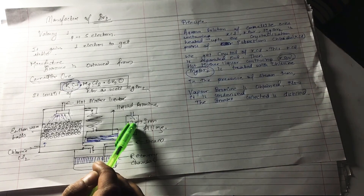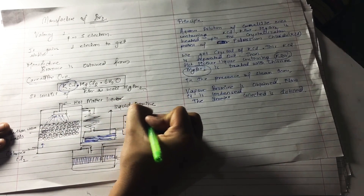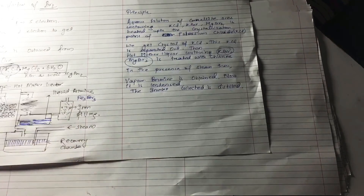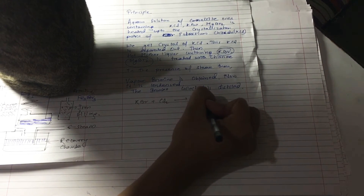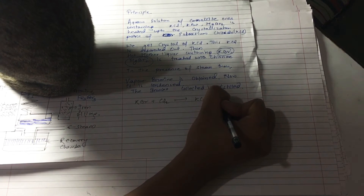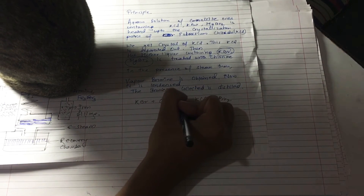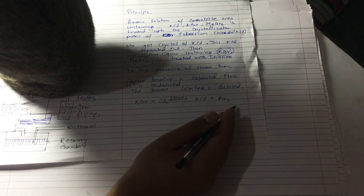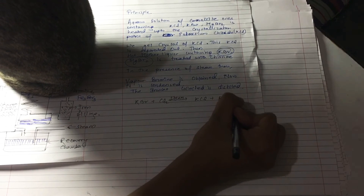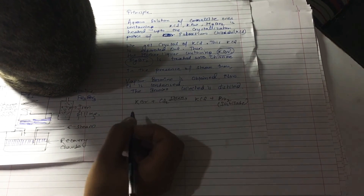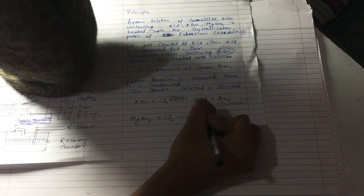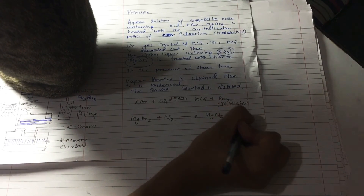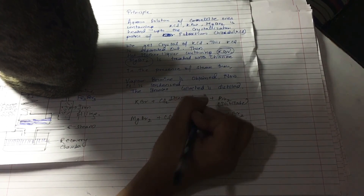So to obtain pure bromine, because it is not a pure bromine yet — it is a bit of a trace of bromine — let me draw the principal reaction right now. So now KBr and Cl2, and MgBr2 and Cl2, give KCl and Br2. I am going to use MgBr2 and Cl2 to get MgCl2 and Br2.